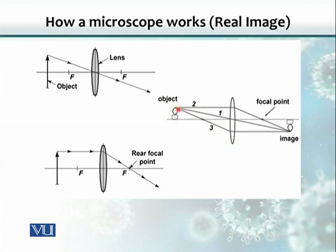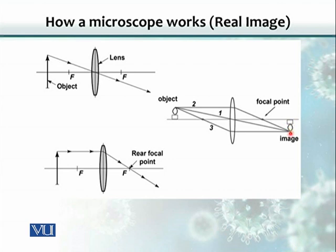You can draw a light ray parallel to the main axis, and when it strikes the lens, it bends and passes through the focal point. Another ray passing through the middle of the lens does not get bent — it remains straight. Where these two rays meet, the image is formed. Because it is formed by converging rays, it is called a real image, and it is upside down and much smaller.